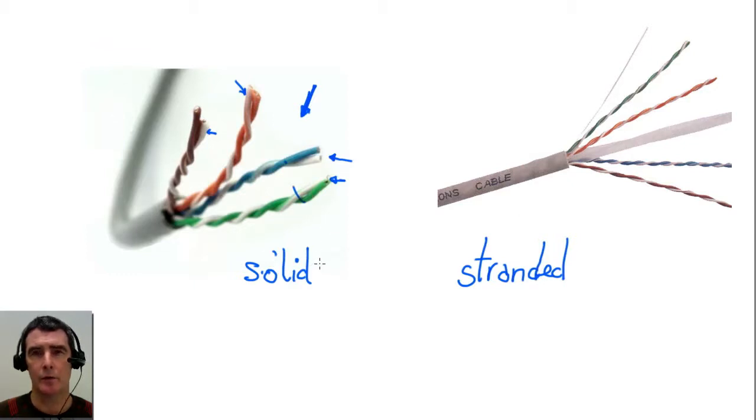Solid wire is used for installing a run behind a drywall or over ceilings. So the longest part of your network connection or infrastructure through a building is all using solid. Stranded is only used in the patch cords that connect up a computer to a device.